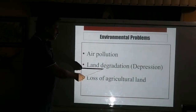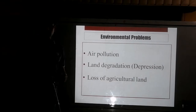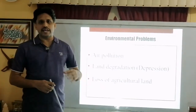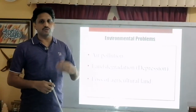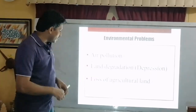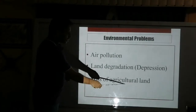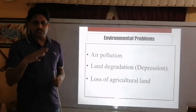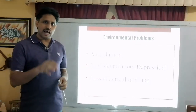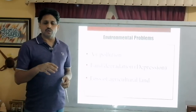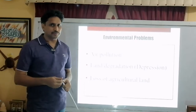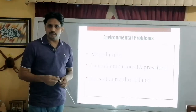Another problem is land degradation — the land gets degraded when clay is extracted and depressions are formed, changing the natural landscape. The third problem is loss of agricultural land, because during the monsoon season heavy rainfall fills these depressions with water, causing waterlogging and salinity, and diseases like malaria are produced because of these depressions.